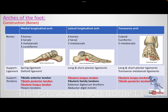The lateral longitudinal arch is simpler. It has two tarsals: the calcaneus and the cuboid dad. The metatarsals involved are the fourth and fifth. Medially we had three metatarsals, laterally we have two, and laterally the cuboid and calcaneus are the supporting bones.